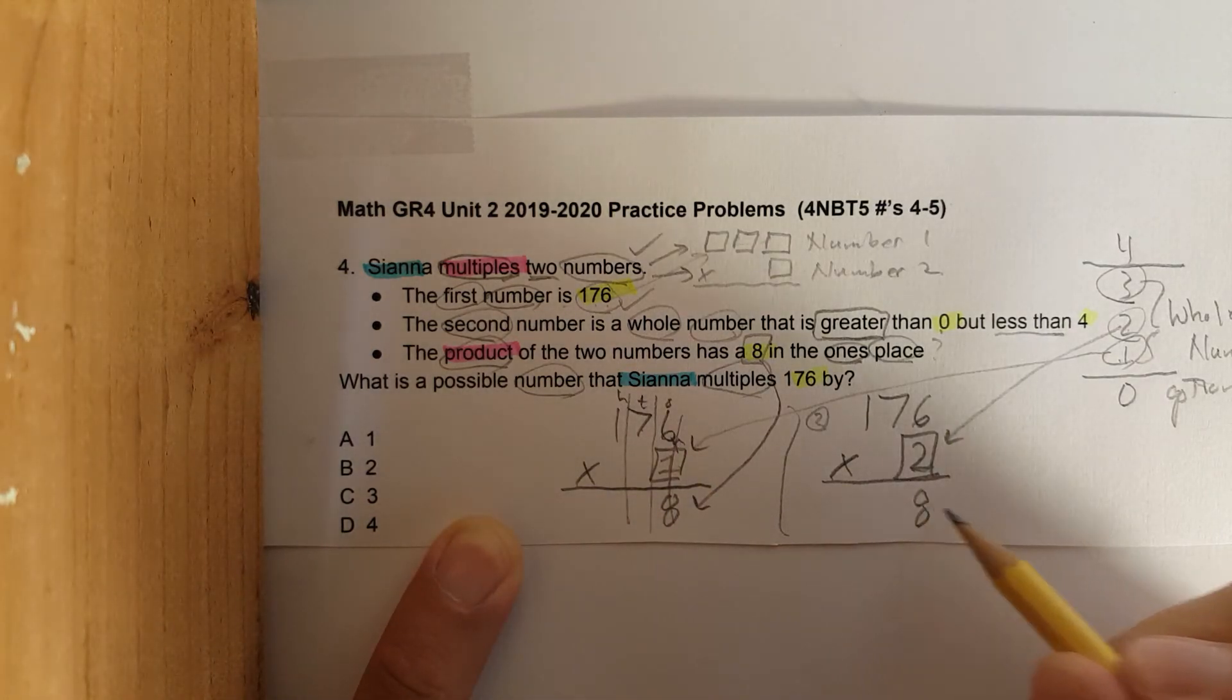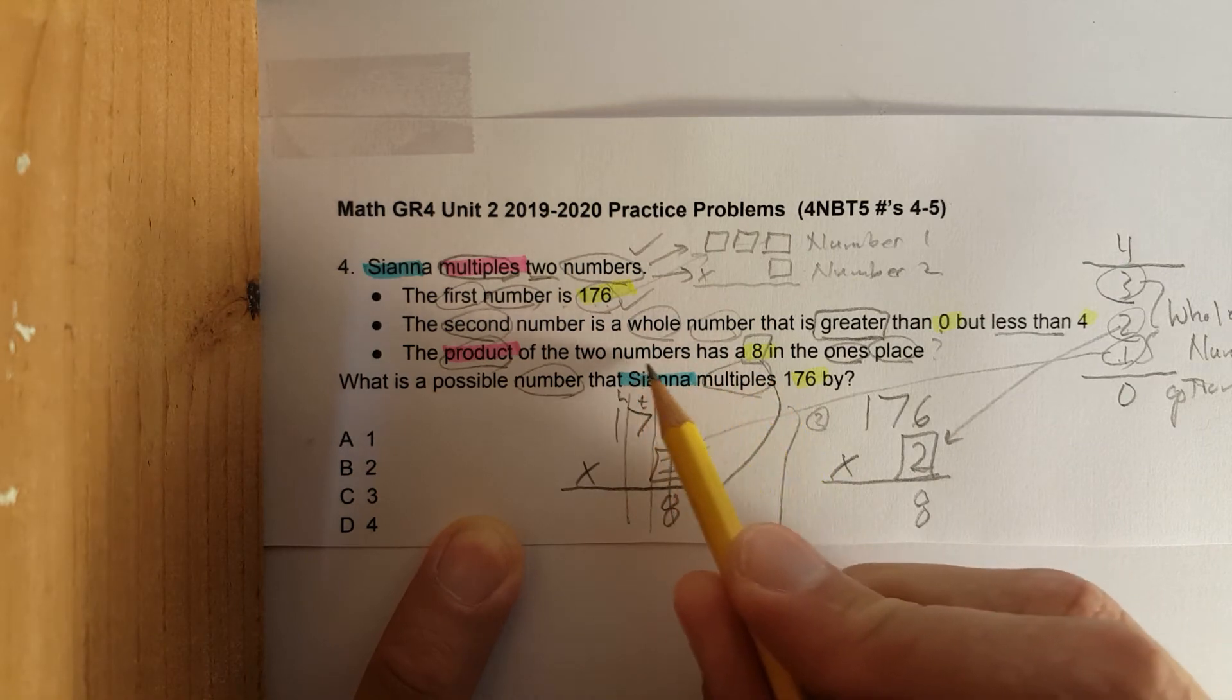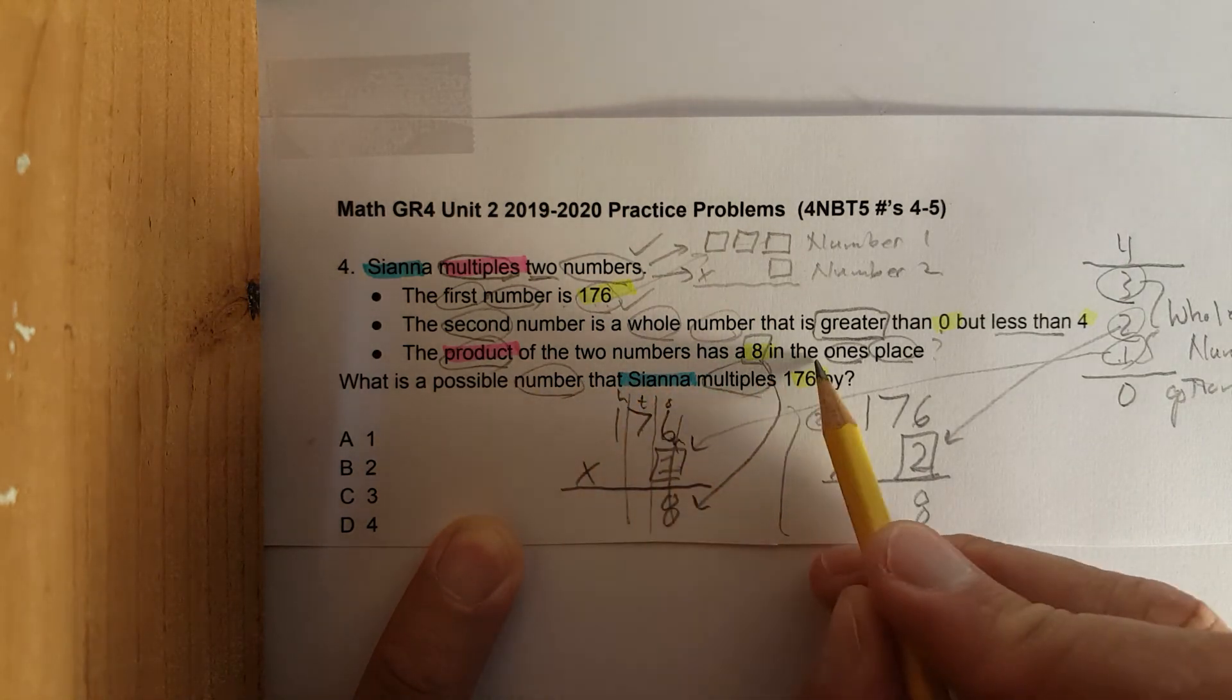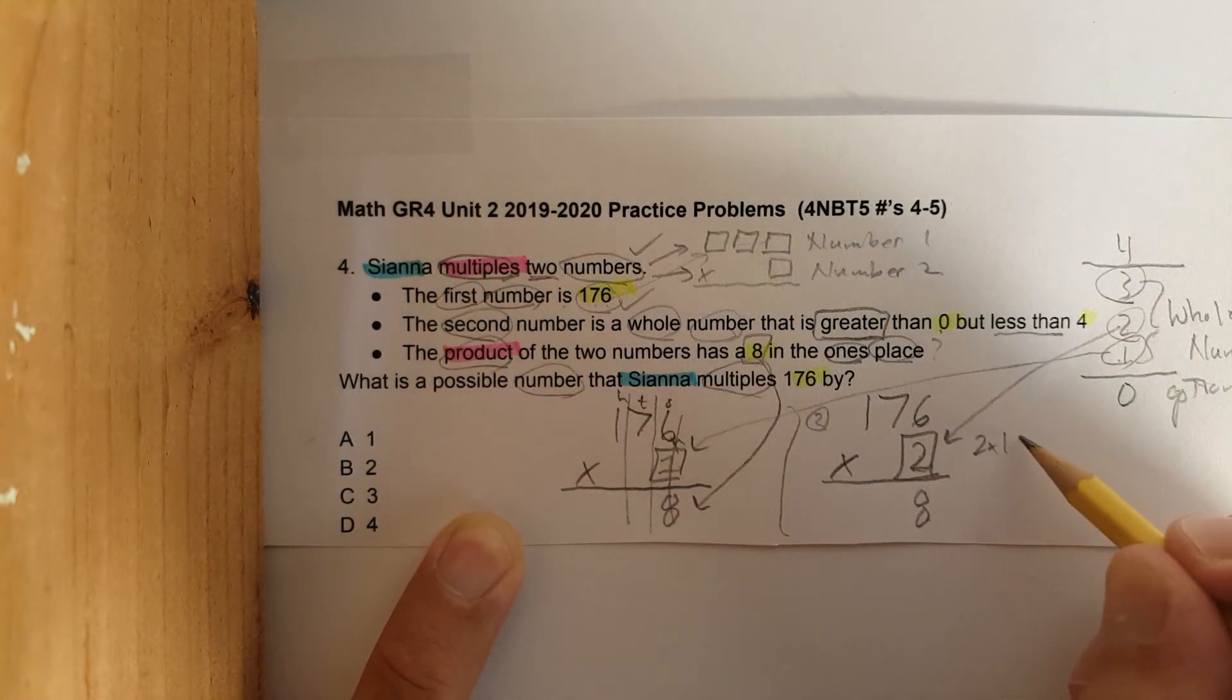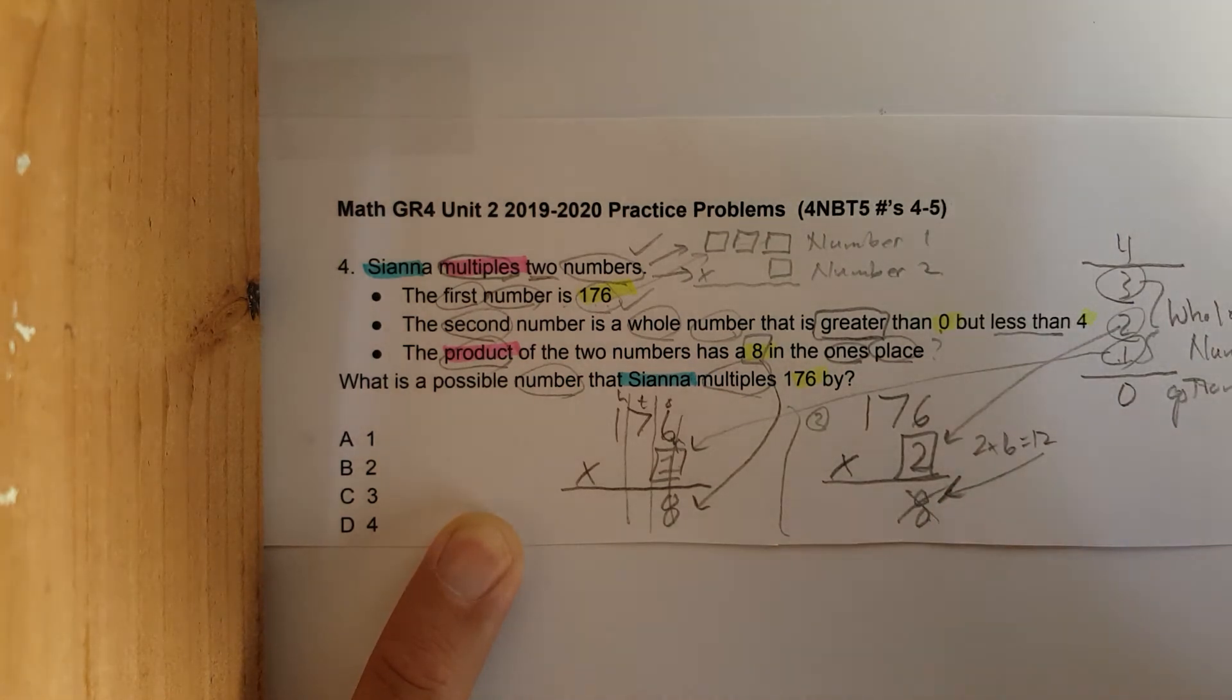Remember, the only information we're given is the product of the two numbers has an eight in the ones place. Here's the eight. Let's see. Is two times six equals eight? Two times six equals 12. That does not equal eight.